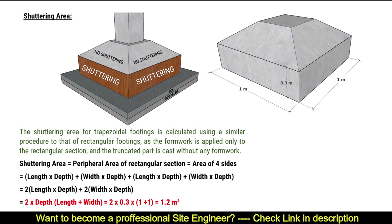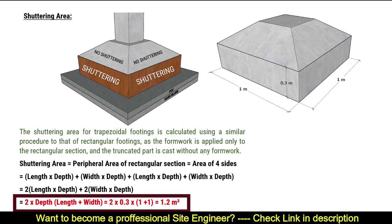Now let's calculate the shuttering area. Only the vertical sides of the rectangular base need formwork. Using the formula: 2 multiplied by depth of cuboid into (length plus width). After substituting the values, we get the shuttering area equal to 1.2 square meters.